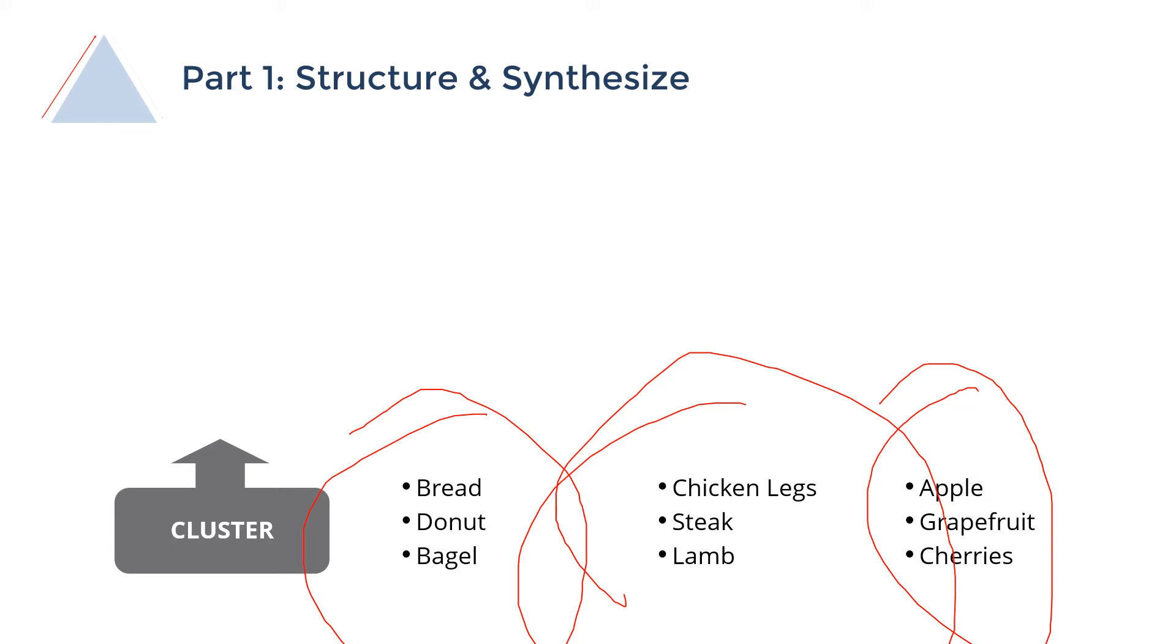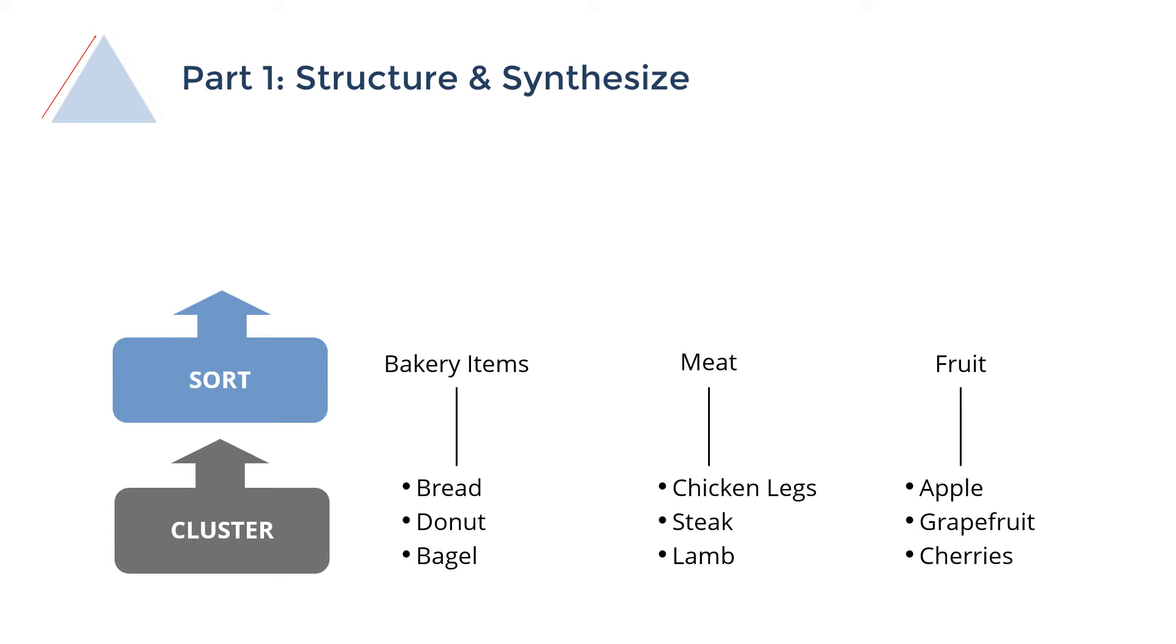Now, next thing you want to do is say, okay, what are these groups, right? So sort them into distinct groups. Again, you want to apply the MECE Principle. These aren't collectively exhaustive, but they are mutually exclusive. Bakery items, meat, fruit.